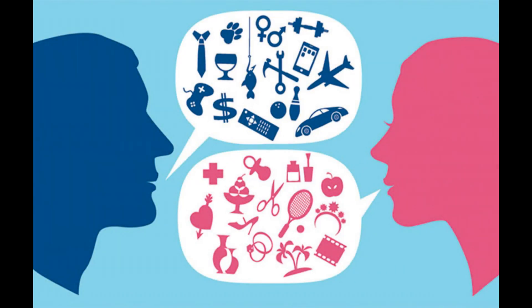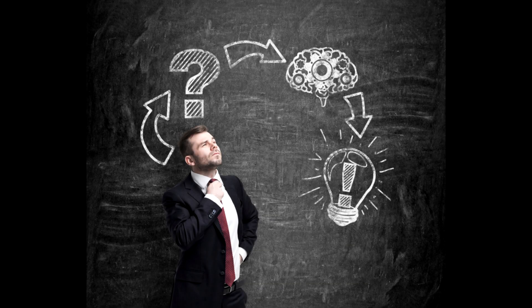Have you ever wondered why we make assumptions? Why we make judgments without all of the information available to us? Why we use rules of thumb, educated guesses, intuitive judgments, guesstimates, profiling, or what's even referred to as common sense? All of these fall under the category of heuristics, and today we're going to discuss what those are and how they work.